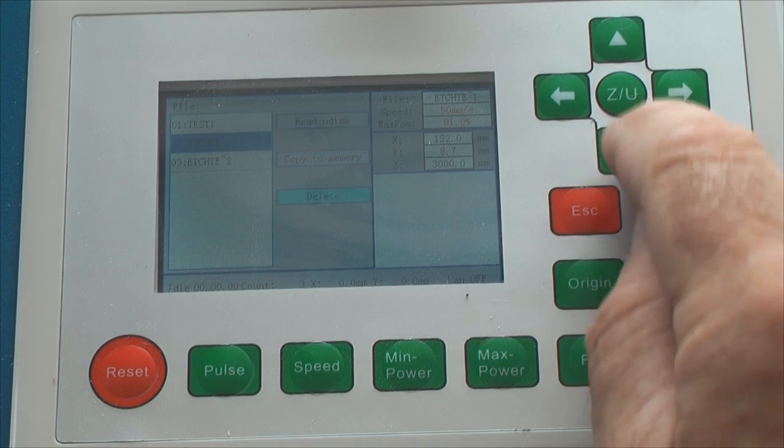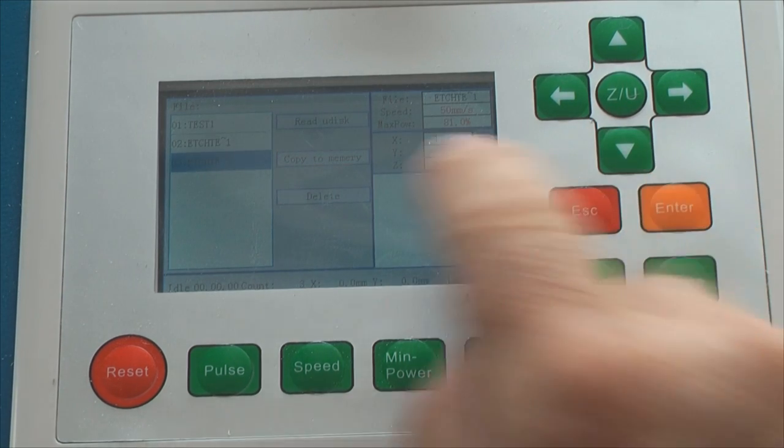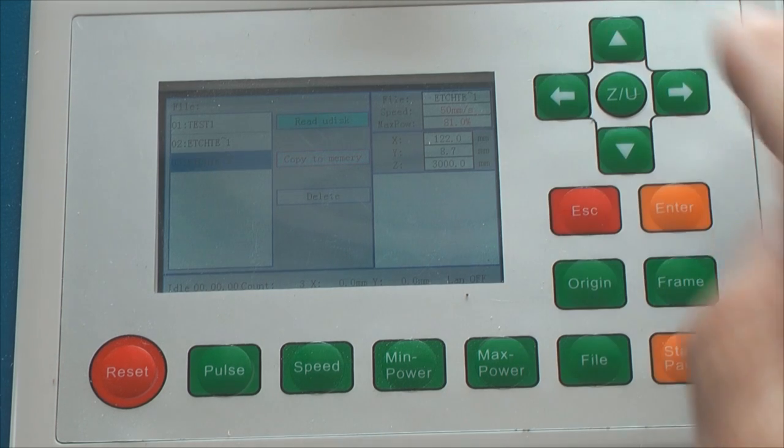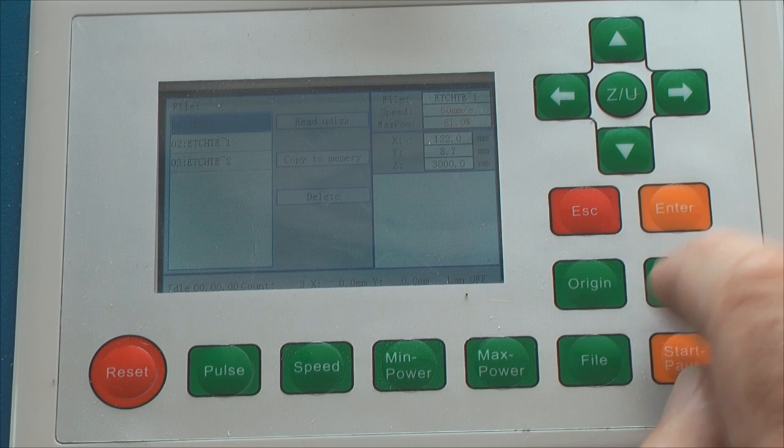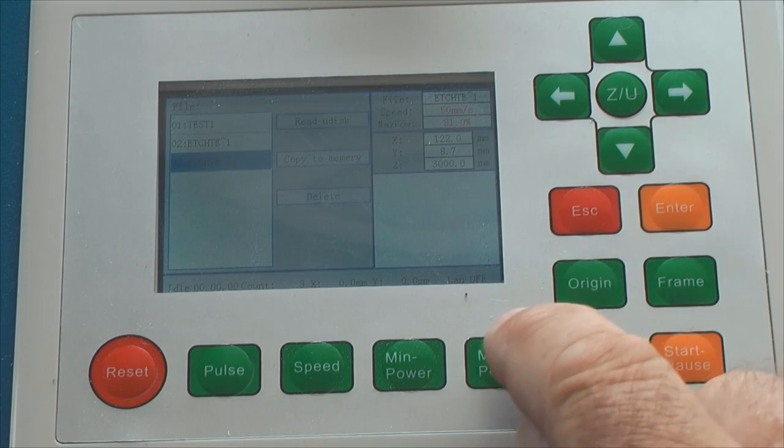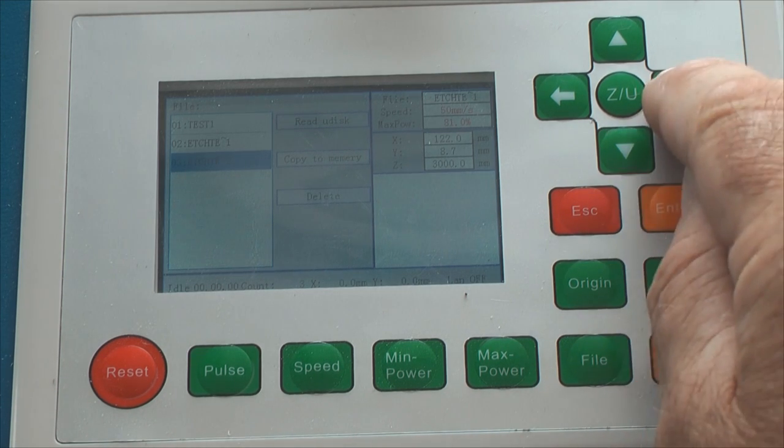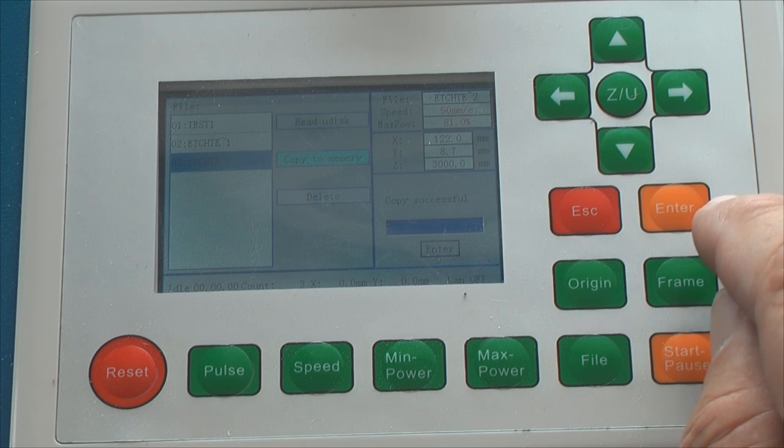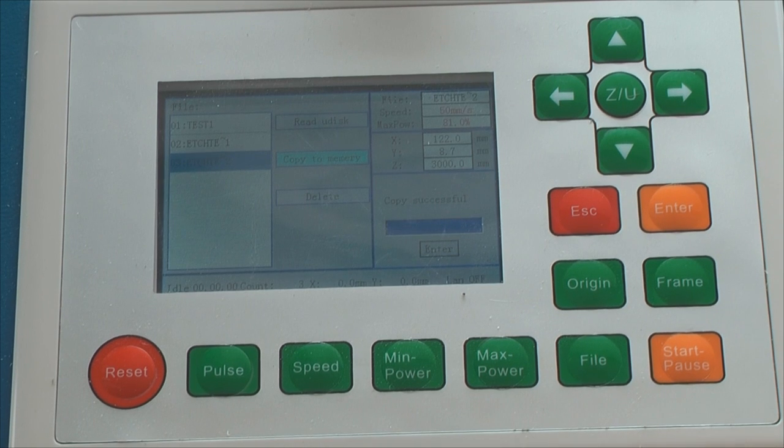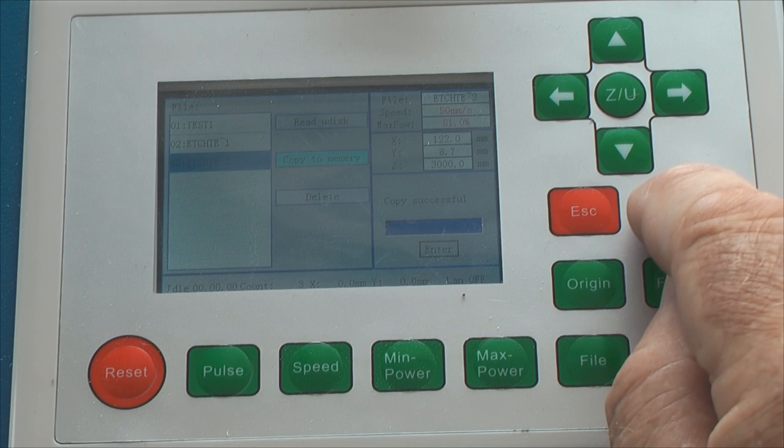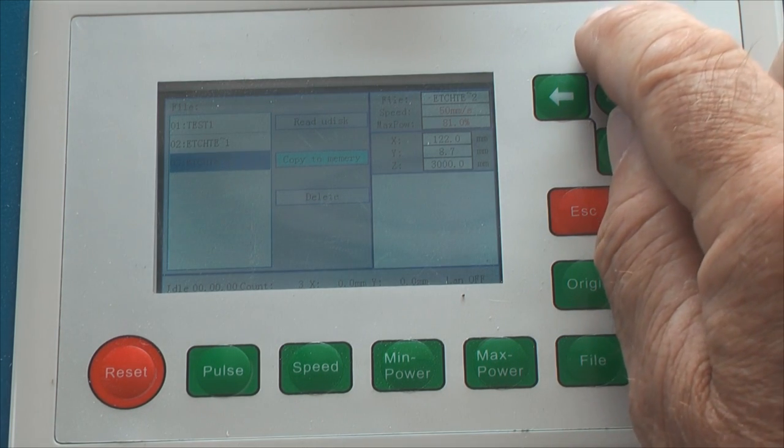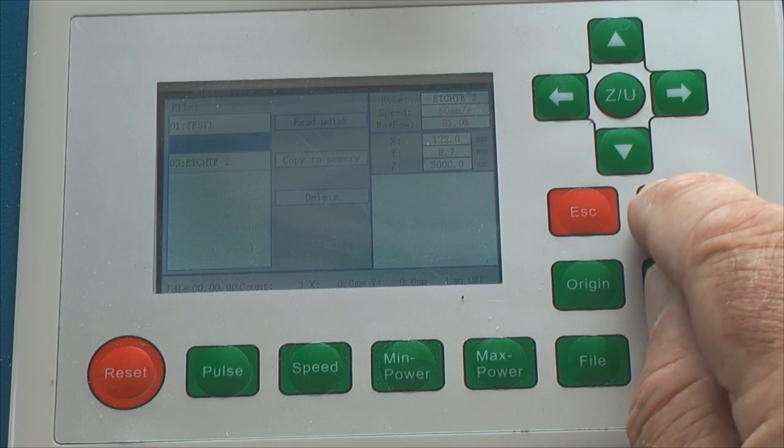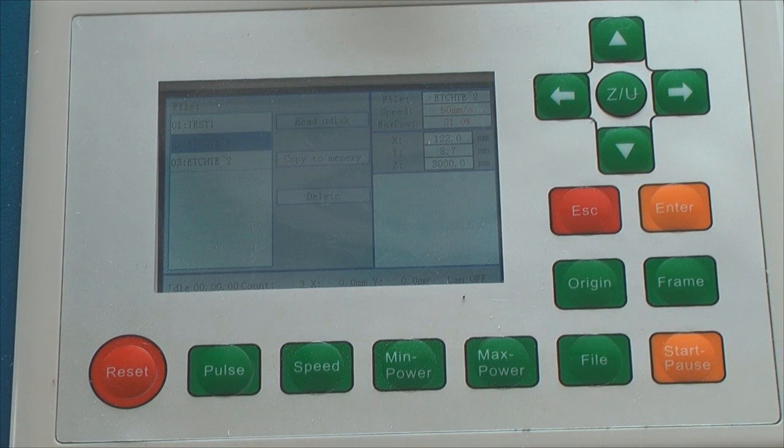Now I should be able to go down to H2, whoops, H2, enter, no. Read from the disk, enter, no, wrong one, we've already done that. H2, enter, and now copy to memory, enter. So that's H2 copied to memory. So I think we've finished with the UDISC now, so if we go back to file, so we should be able to do enter. Enter. If we go back to file, I should be able to choose one. Enter.